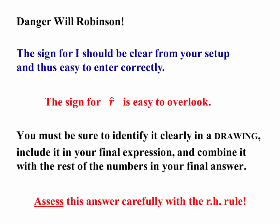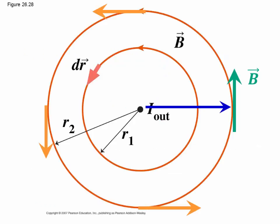Be careful. The sign for i should be clear from your setup and easy to enter correctly. The sign for r hat is easy to get wrong. Be sure you've identified it clearly in a drawing and include it in your final expression, including the sign, and then combine those signs with the rest of the numbers. So you've got magnitude and direction, where there is a sign in the direction, and a sign perhaps in the magnitude from the current.